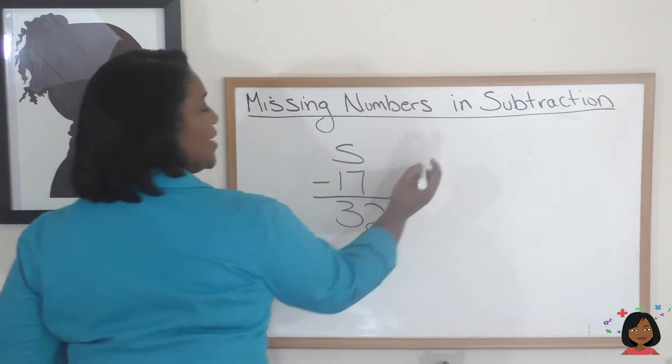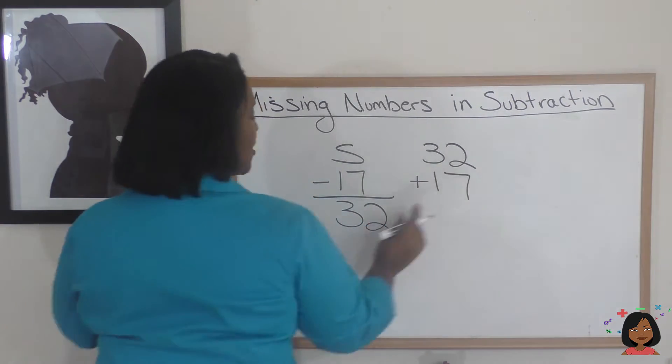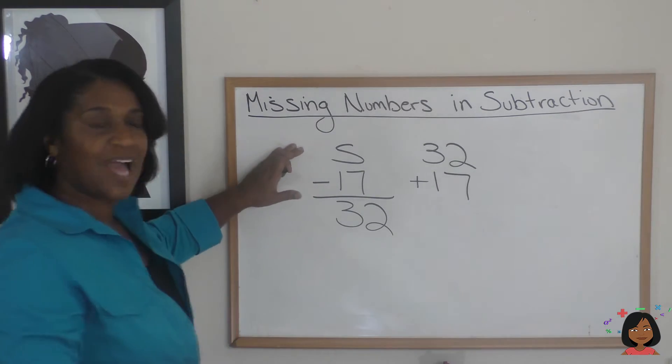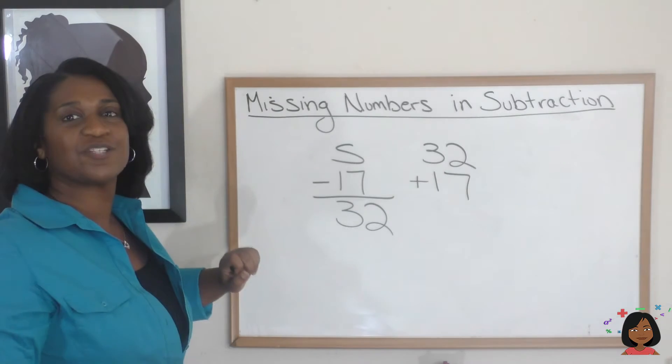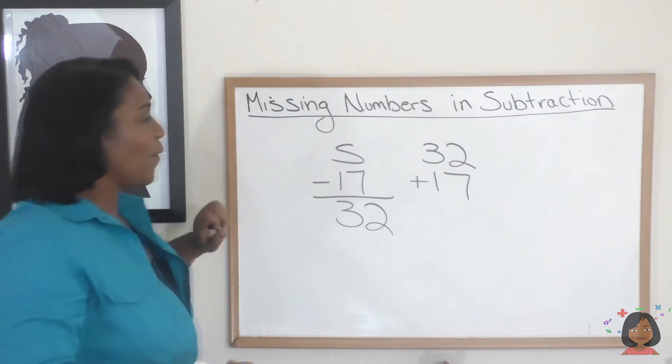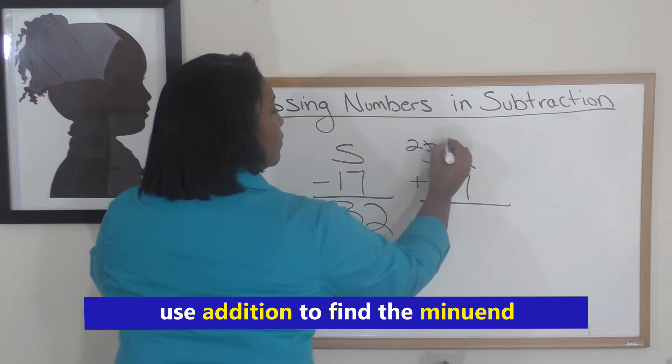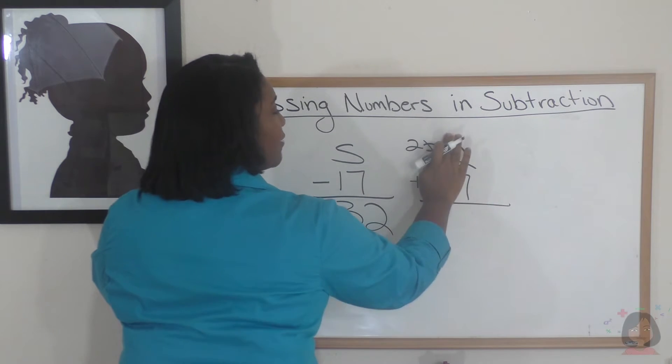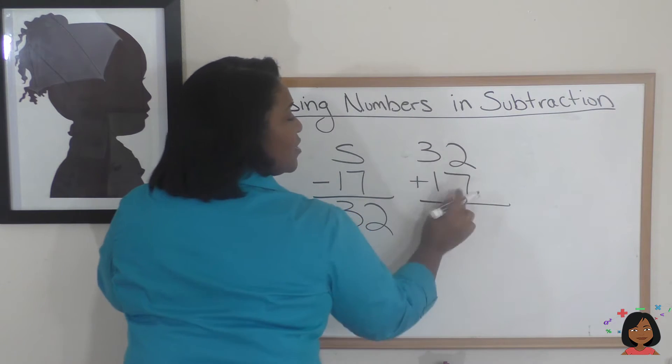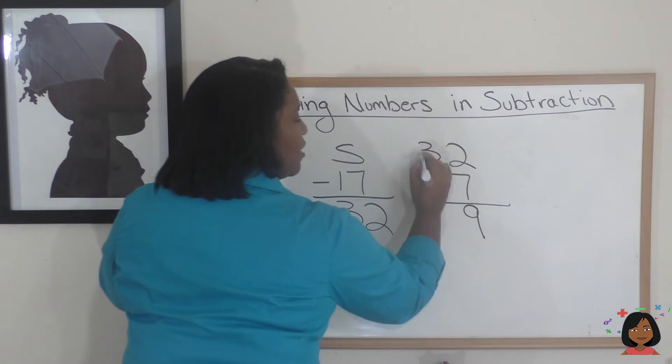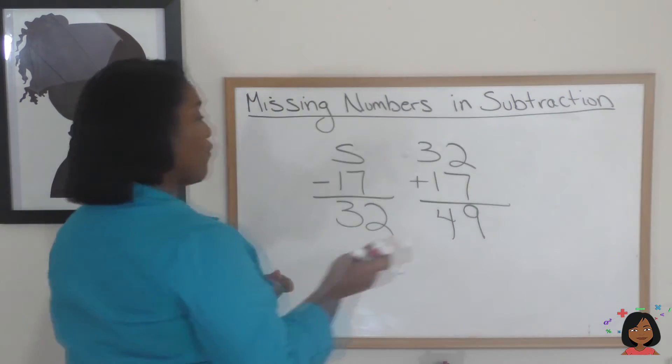So, let's go ahead and add these two. 32 plus 17, because we know that this s has got to be a bigger number than both 17 and 32. So, let's add them together. Oops, I should be adding. I got confused. That happens sometimes. There we go. 7 plus 2 is 9. 3 plus 1 is 4. So, it tells us that our answer is 49.